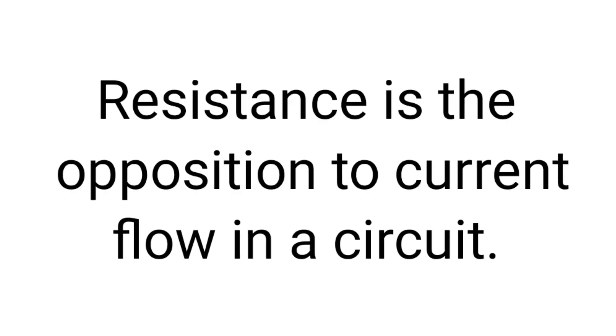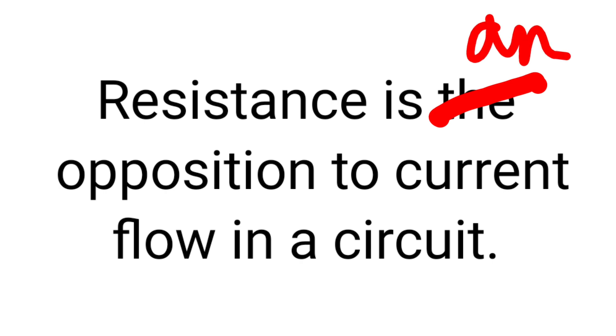Finally, we're going to consider resistance. On the worksheets, the definition reads: resistance is an opposition to current flow in a circuit. I always used to make learners change 'the' to 'an' in that sentence — 'resistance is an opposition to current flow in a circuit' — because that indicates there is more than one type of opposition to current flow. We're not going to worry about that until we get to AC theory, where we start to consider these other types of opposition to current flow. But for the time being, just get into your head that resistance is just one type of opposition to current flow that you'll find in a circuit.